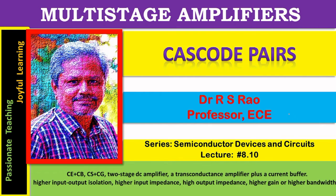How to overcome these shortcomings? How to make these two stages, CE and CS, useful at high frequencies and achieve good bandwidths from them? The answer — the solution to this question — led to an amendment, a modification to CE and CS stages. It resulted in the cascode pair. This is cascode structure: multi-stage amplifiers. Cascode pairs — series on semiconductor devices and circuits, lecture number 8.10.